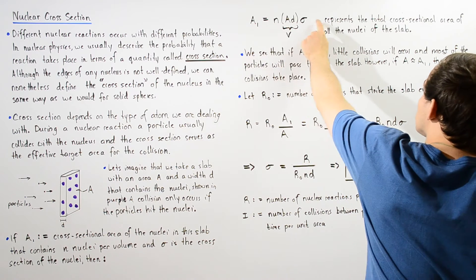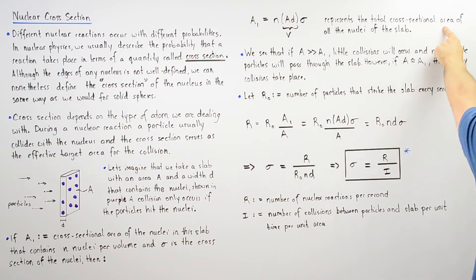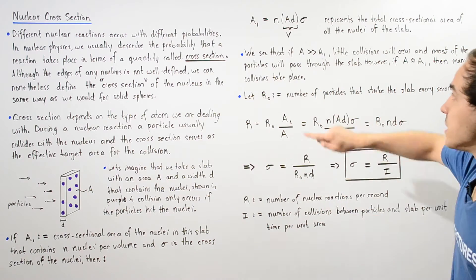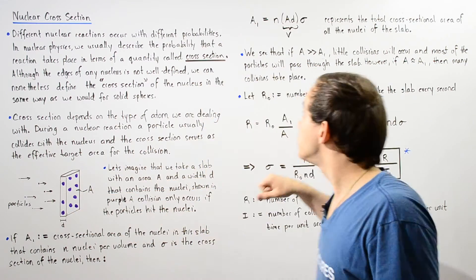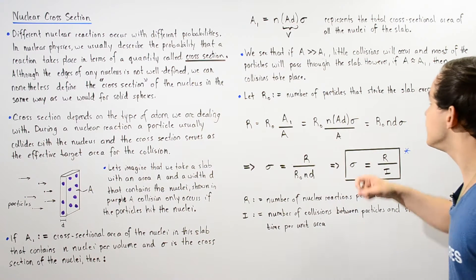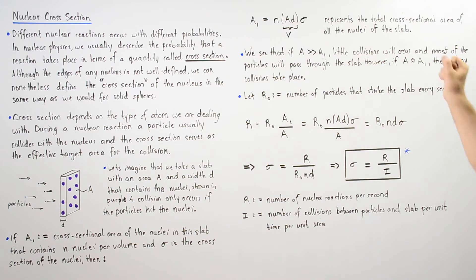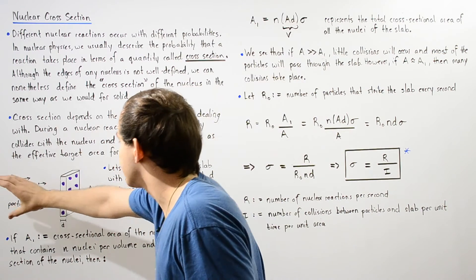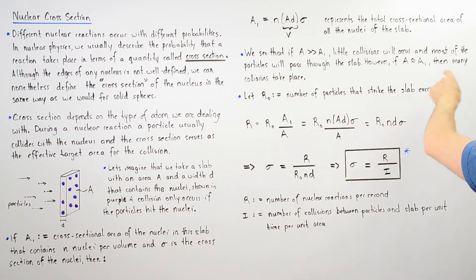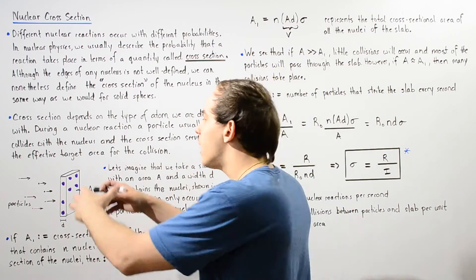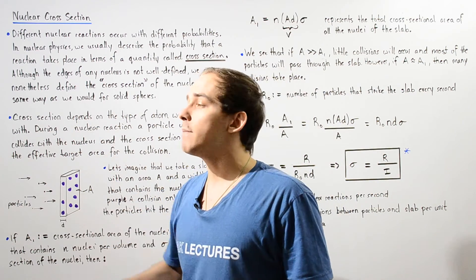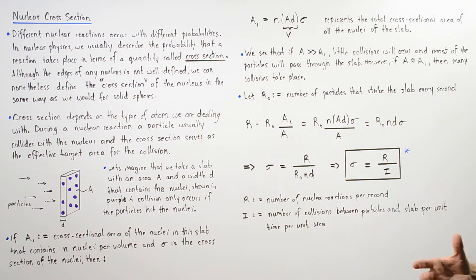A1 represents the total cross-sectional area of all the nuclei within this slab. If the area A is much greater than A1, meaning this entire region consists mostly of empty space, then very few collisions will actually occur and most particles will pass through undeflected. However, if A is approximately equal to A1, then we have a very high concentration of nuclei, so collisions and nuclear reactions will take place with high probability.